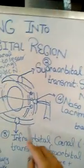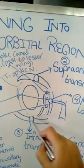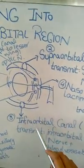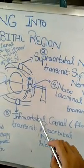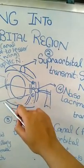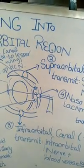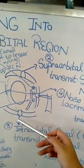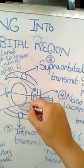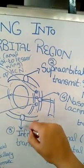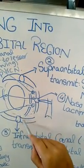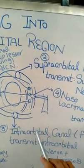The third opening is in the floor of the orbit, or the inferior margin of the orbital region. That opening is called the infraorbital canal. According to its name, it transmits the infraorbital nerve and blood vessels. So from below, any nerves or blood vessels wanting to enter or leave the orbital cavity will pass through the infraorbital canal.